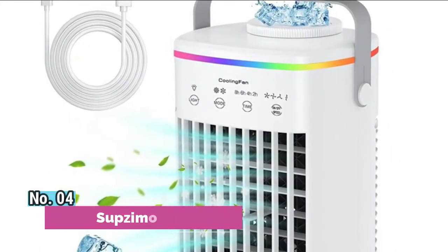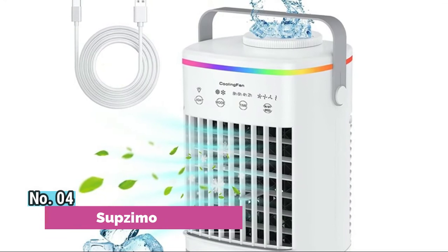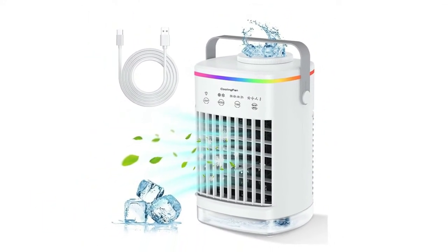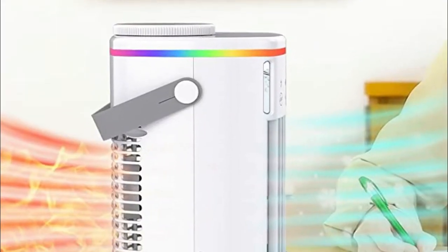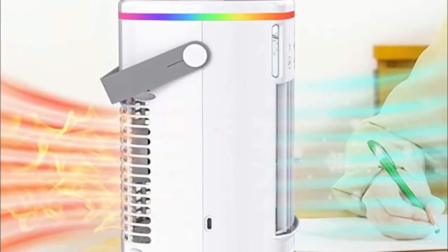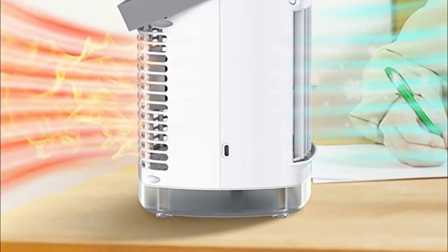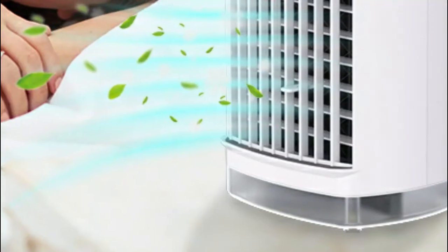Number 4, Subzimo. It features 4 speed modes and a 120-degree up and down adjustable wind direction design. Even more, it has 3 wind modes using dual ultrasonic atomizers and wet triple refrigeration. It turns hot dry air into cool and fresh air, so you can choose the ideal wind direction and modes to meet your needs.